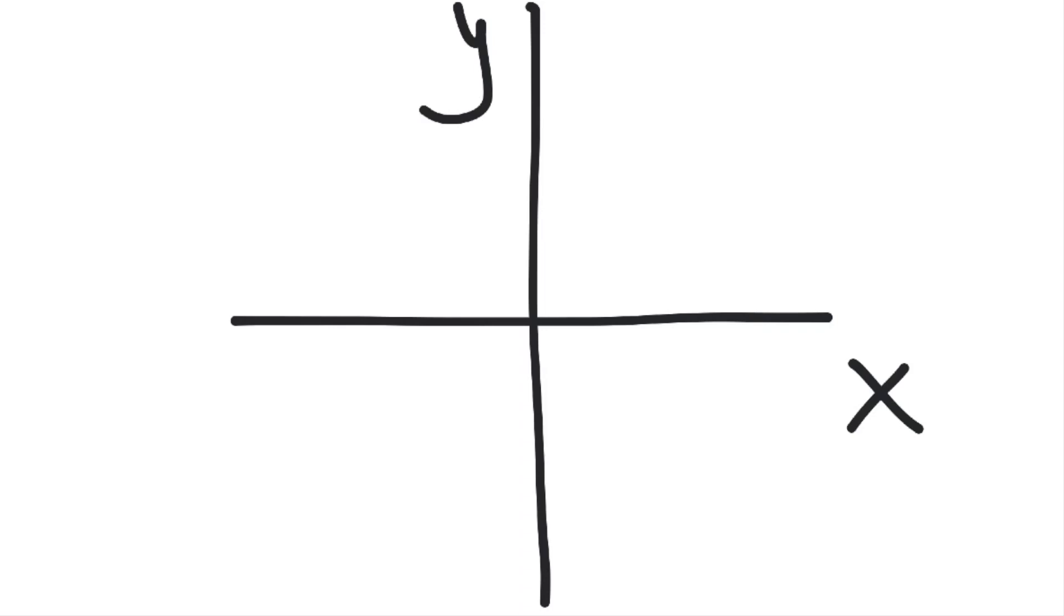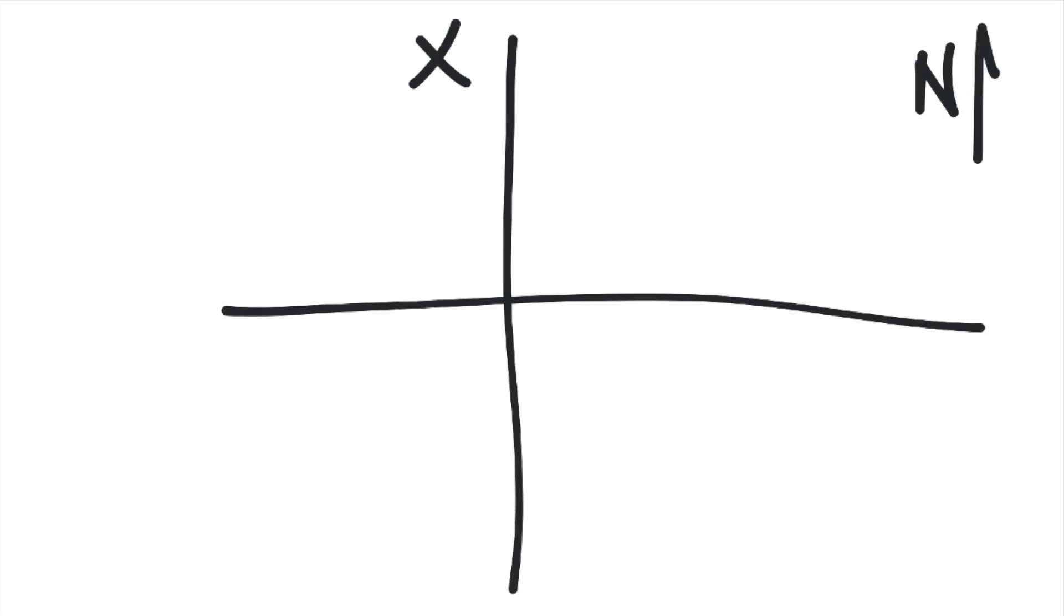But in surveying, they do everything in terms of the north, and the north is up. So they would draw it with the x-axis going vertical, the y-axis horizontal, and the angles measured clockwise starting from the x-axis on top.